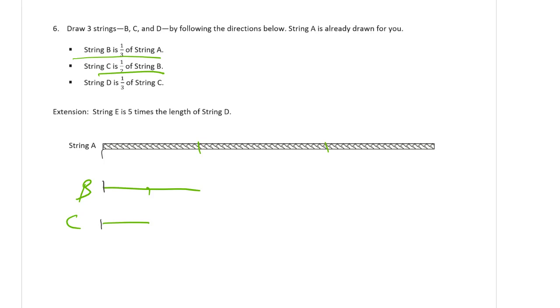String D is one third of string C. So, these are getting smaller and smaller. So, we need thirds here, about like that. Then we have this tiny piece here for D. And then, string E is five times the length of D if we want the extension. So, E is going to be, there's a D, right? So, we need one, two, three, four, five units or five D's to make an E.